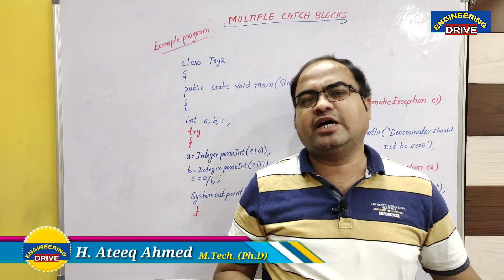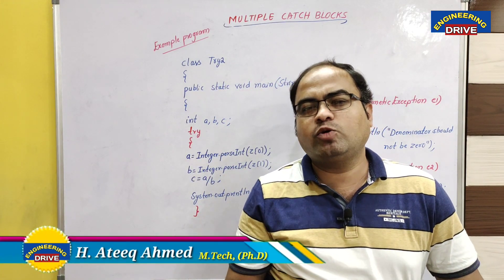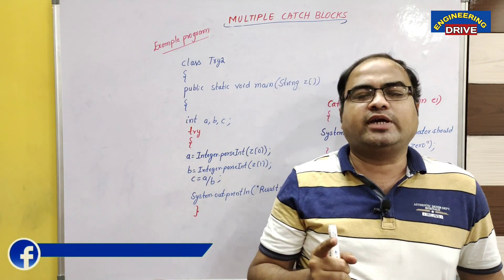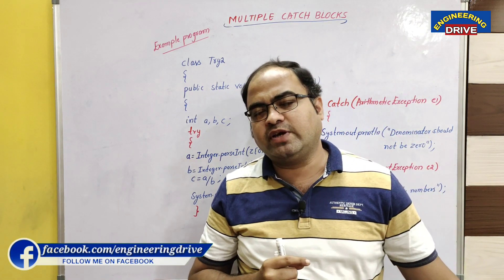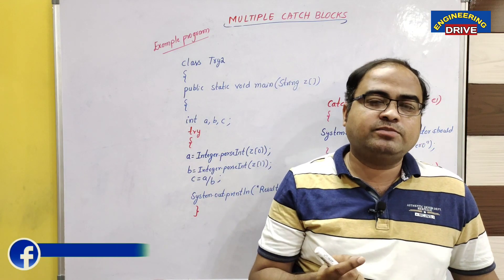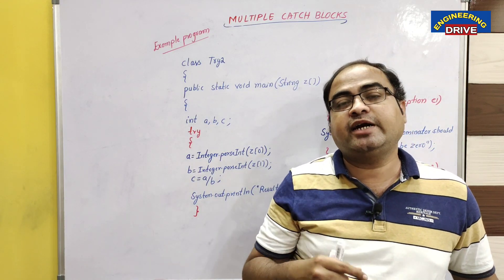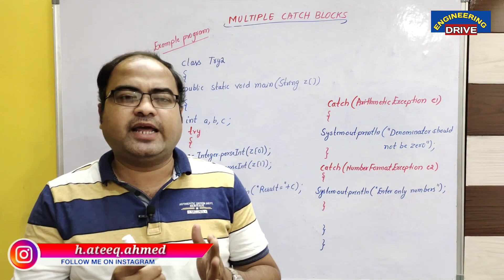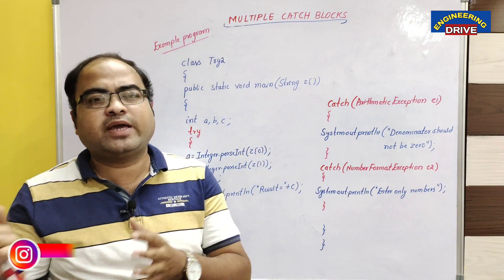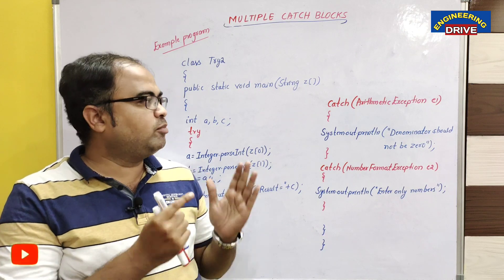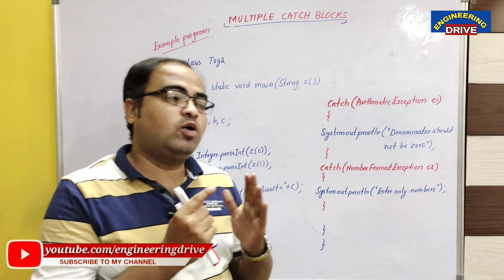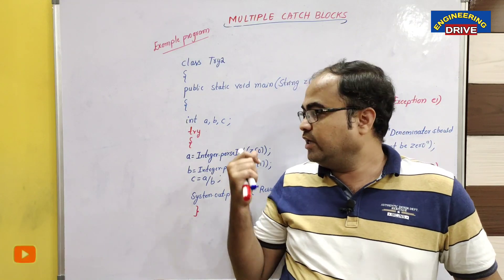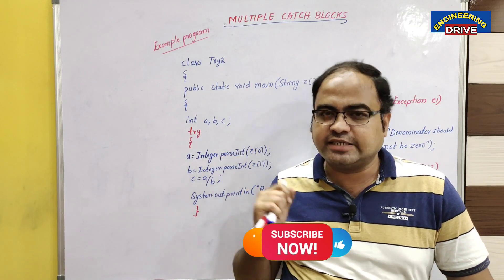When we want to handle exceptions in a Java program, generally we make use of one try block and one catch block. The problem with one catch block is it can handle only one type of exception, but sometimes a try block can generate more than one exception. In those circumstances, a try block needs to have multiple catch blocks. How a try block can have multiple catch blocks and generate multiple exceptions — I am going to discuss everything with this example program.